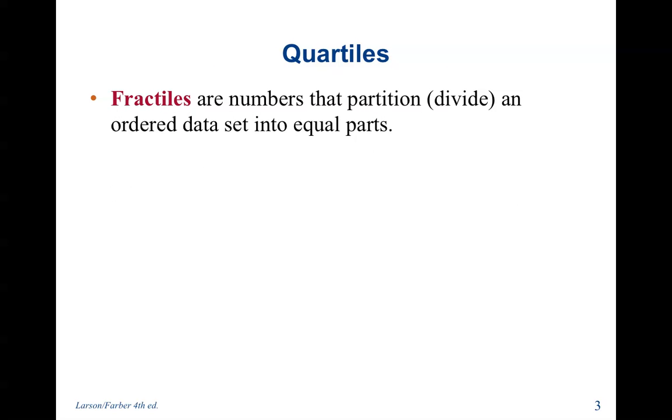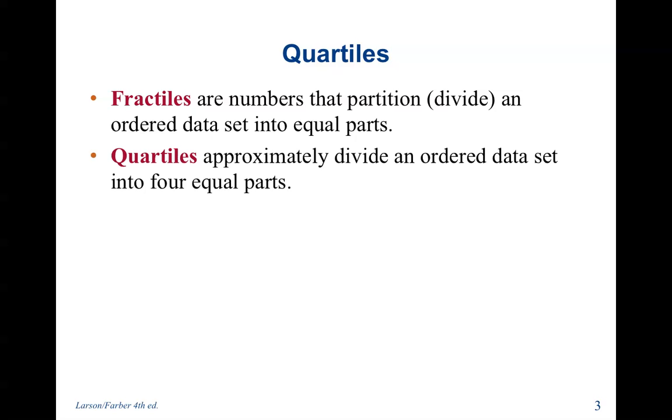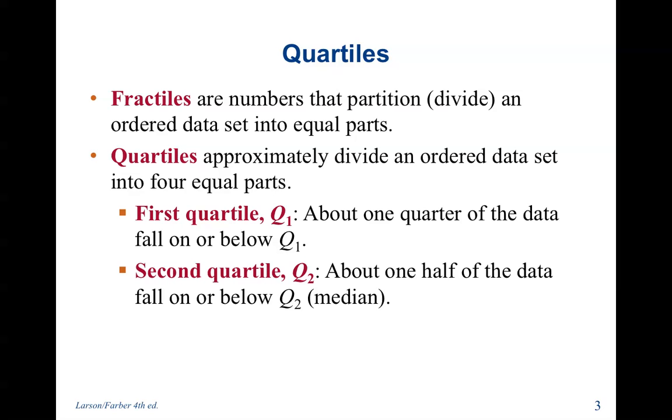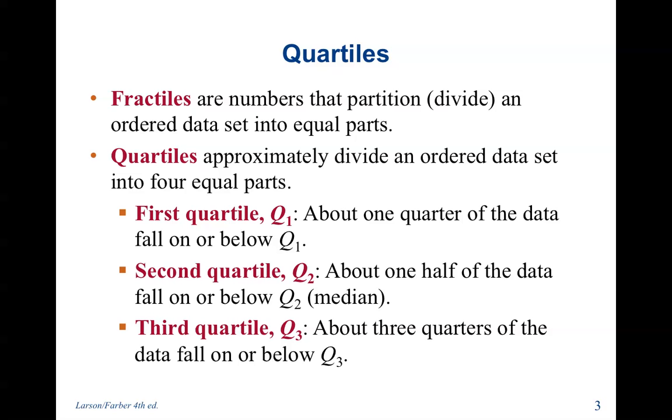Fractiles are numbers that partition or divide an ordered data set into equal parts. Quartiles are a type of fractiles. They divide a set into four equal parts. That is going to be the most important fractile that we are going to cover right now. The first quartile is called Q1, and about one-quarter of the data fall below Q1. The second quartile is Q2. It is also the median of our data set, and half of the data falls on or below Q2. The third quartile, about three-quarters of the data, fall on or below Q3.